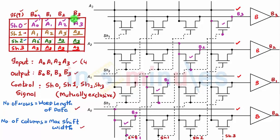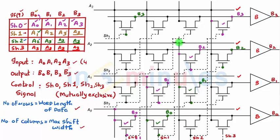Let's see another case: when shift 1 is high. The four green-dot transistors receiving shift 1 are on, covering outputs B0, B1, B2, and B3. This transistor is on and connected to A1, so B0 equals A1. Verified. The next is connected to A2, so B1 equals A2. Verified. The next is connected to A3, so B2 equals A3. Verified. The last is also connected to A3, so B3 equals A3. Verified.